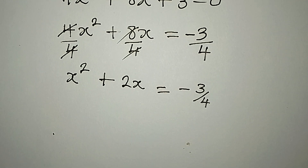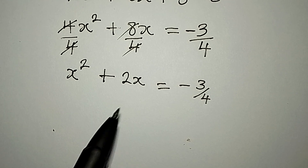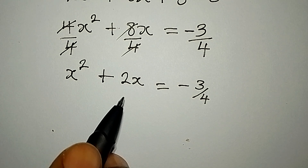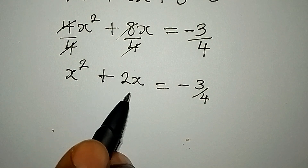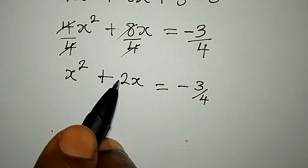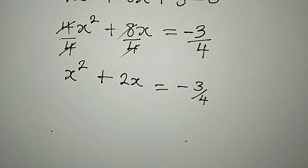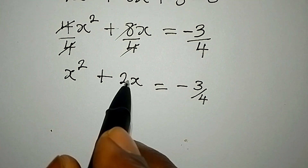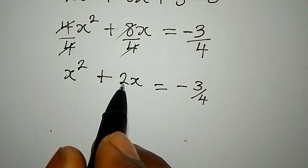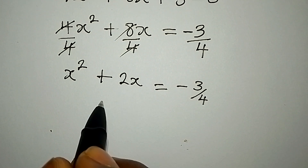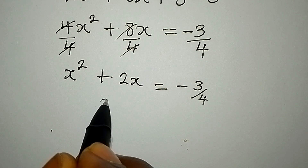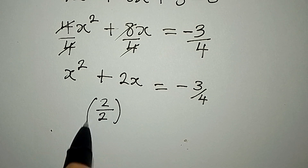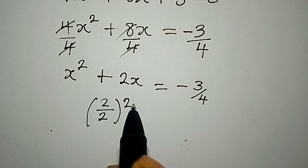Now what do we do? I'm going to add the square of the half of the x-coefficient. The coefficient of x is 2, so I divide it by 2 to get 1, and then square that. So I'm going to add this value to both sides.